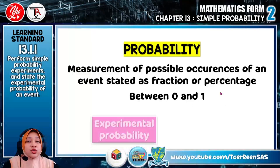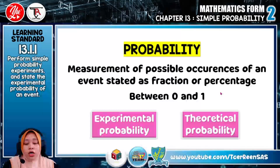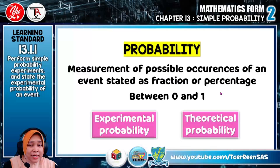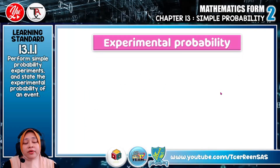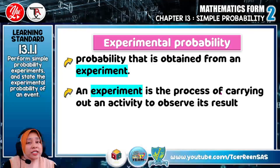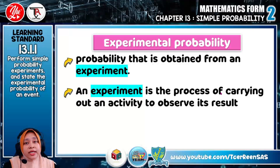There are two types of probability, which is experimental probability and theoretical probability. In this video, we will learn what is experimental probability. Experimental probability is the probability that is obtained from an experiment. What is experiment? Experiment is the process of carrying out an activity to observe its result.